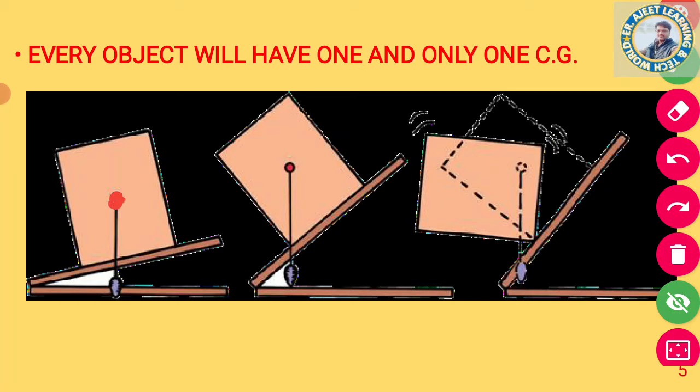वह weight concentrated है और वह point, point of balance है — means वह balancing point है। तो center of gravity किसी भी object के लिए सिर्फ एक ही होता है।